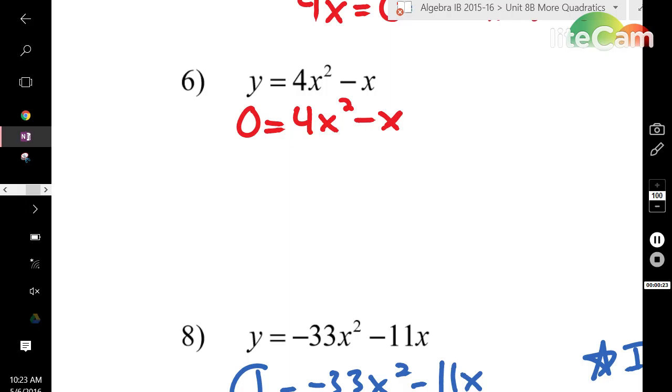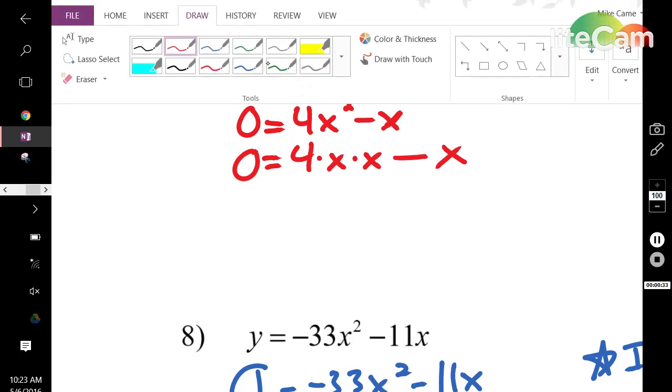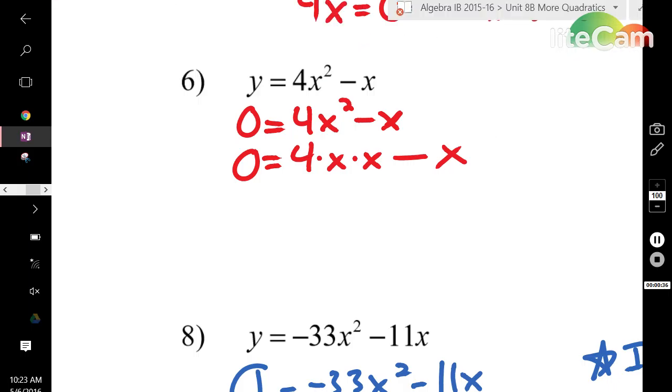Now, we get to list out all the factors of each term. So, I'm going to rewrite 4x squared as 4 times x times x minus x. I'm going to highlight the greatest common factor from each term. So, I have an x here, 1x here, and 1x here. And that's really all I can factor out.